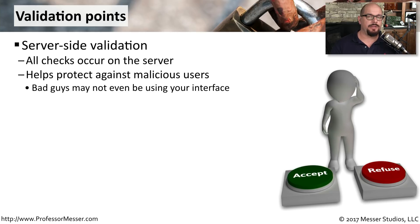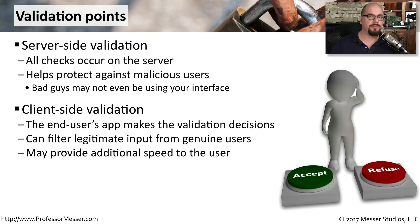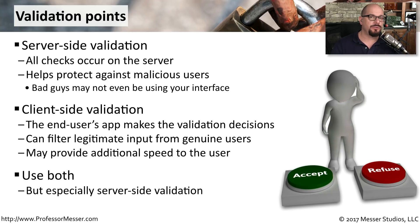When data needs to be validated in your application, there are different places where you can perform this validation. With server-side validation, all checks occur on the server itself, meaning that even if bad guys bypass the front end, the data is still validated when it arrives at the server. The application front end is another good place to perform validation — this is client-side validation, which can filter legitimate users from illegitimate ones and speed up the process since checks take place on the user's local computer. Ideally, you want validation occurring on both the server-side and the client-side.